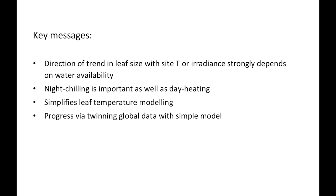The key message is that the direction of leaf size in relation to site temperature or irradiance strongly depends on water availability — with hindsight maybe obvious, but it really wasn't appreciated before. It's very cool to show that night chilling is important as well as day heating, which pushes our understanding quite a bit forward. We've got a nice simple leaf temperature model potentially useful for vegetation modelling. The reason I went to all this trouble is because it's a nice illustration that progress can be made by twinning global datasets with simple modelling. I'd like to invite questions or comments. Thank you.